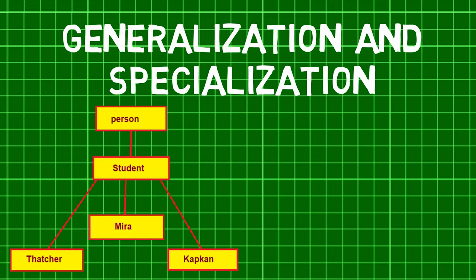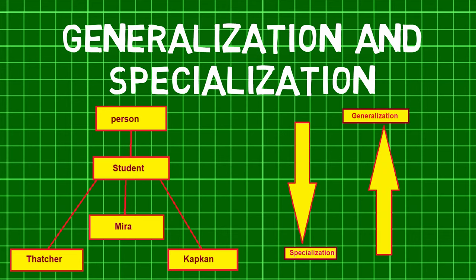The ER model has the power of expressing database entities in a conceptual hierarchical manner. As the hierarchy goes up, it generalizes the views of entities, and as we go deep in the hierarchy, it gives us the detail of every entity included. Going up in this structure is called generalization, where entities are clubbed together to represent a more generalized view. For example, a particular student named Mira can be generalized along with all the students — the entity shall be a student, and further, the student is a person. The reverse is called specialization, where a person is a student and the student is Mira.